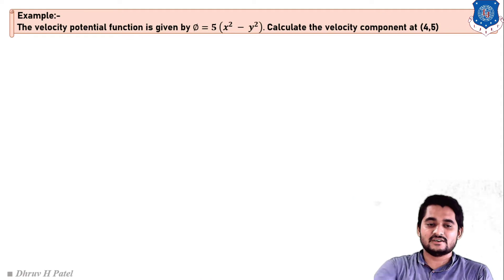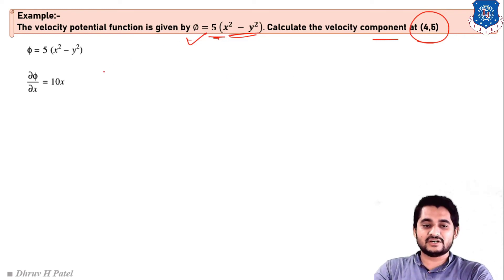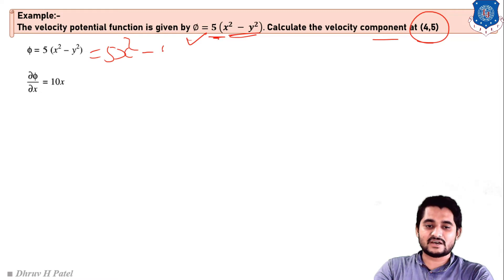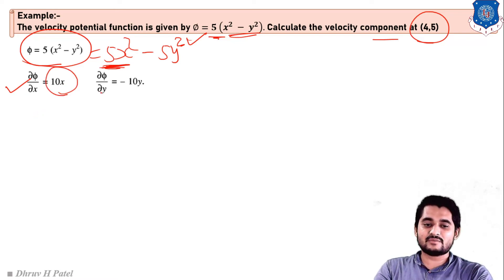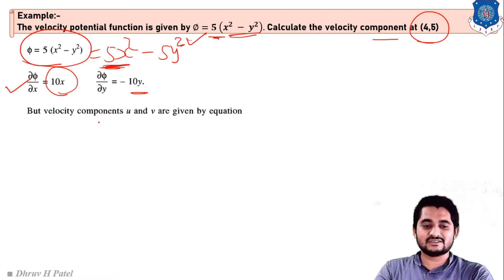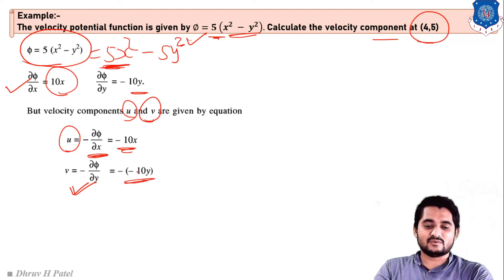Example: the velocity potential function phi is given as phi = 5(x² - y²). Calculate the velocity components at point (4, 5). So phi = 5x² - 5y². Differentiating: del phi / del x = 10x, and del phi / del y = -10y. From the definition, u = -del phi / del x = -10x, and v = -del phi / del y = -(-10y) = 10y.